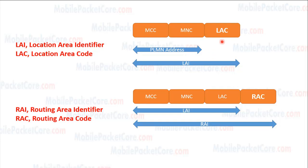The LAC uniquely identifies every location area inside the network. The Routing Area Identifier, RAI, globally identifies every routing area. RAI consists of the LAI in addition to the Routing Area Code, RAC. The RAC uniquely identifies every routing area inside the location area.